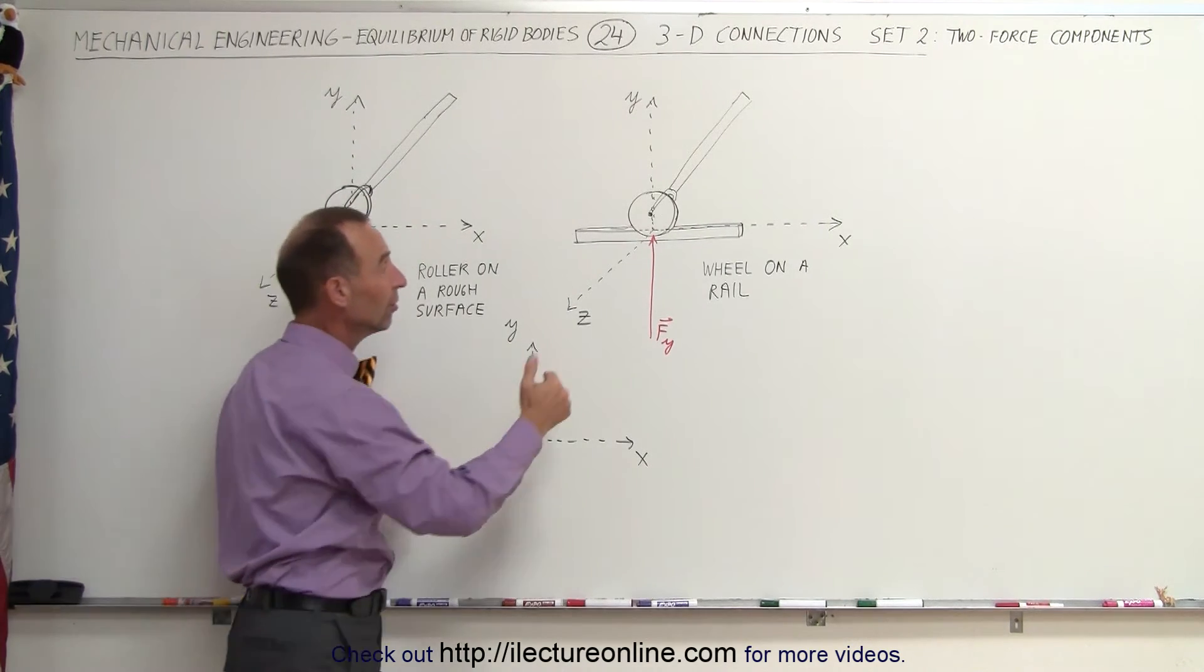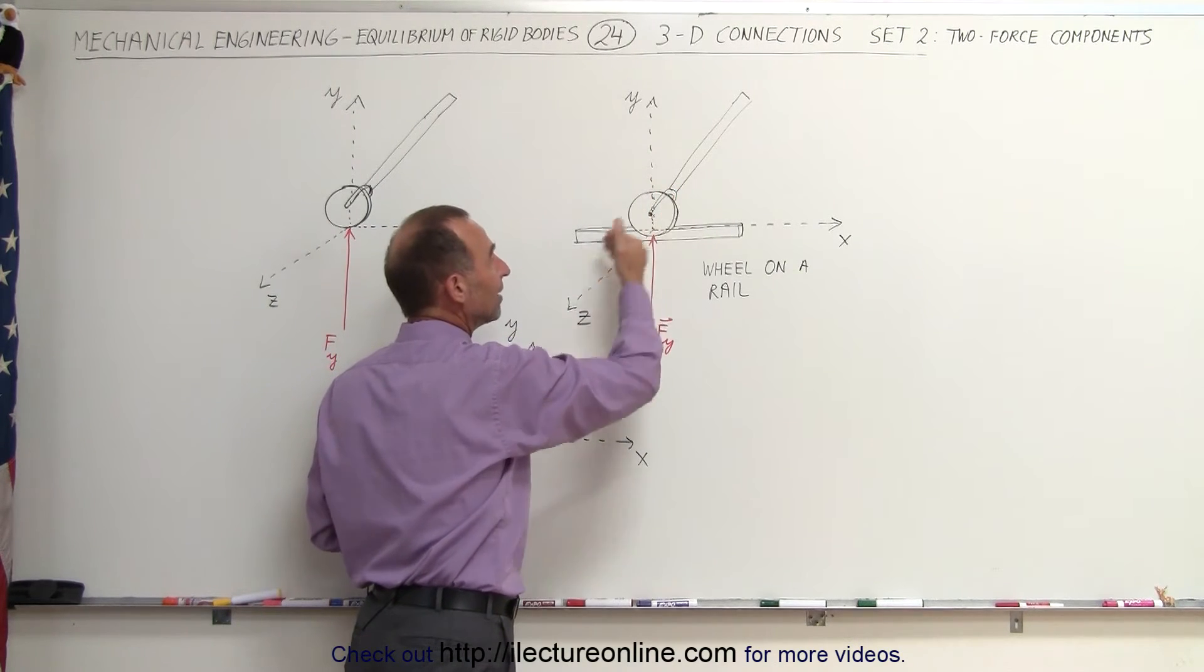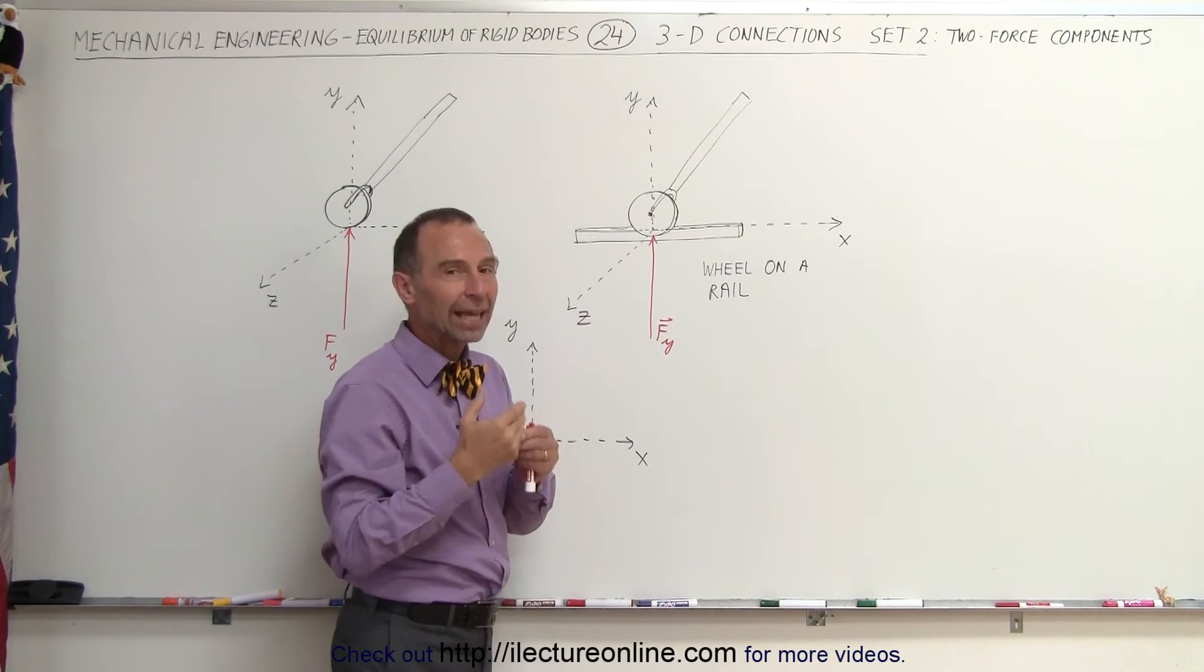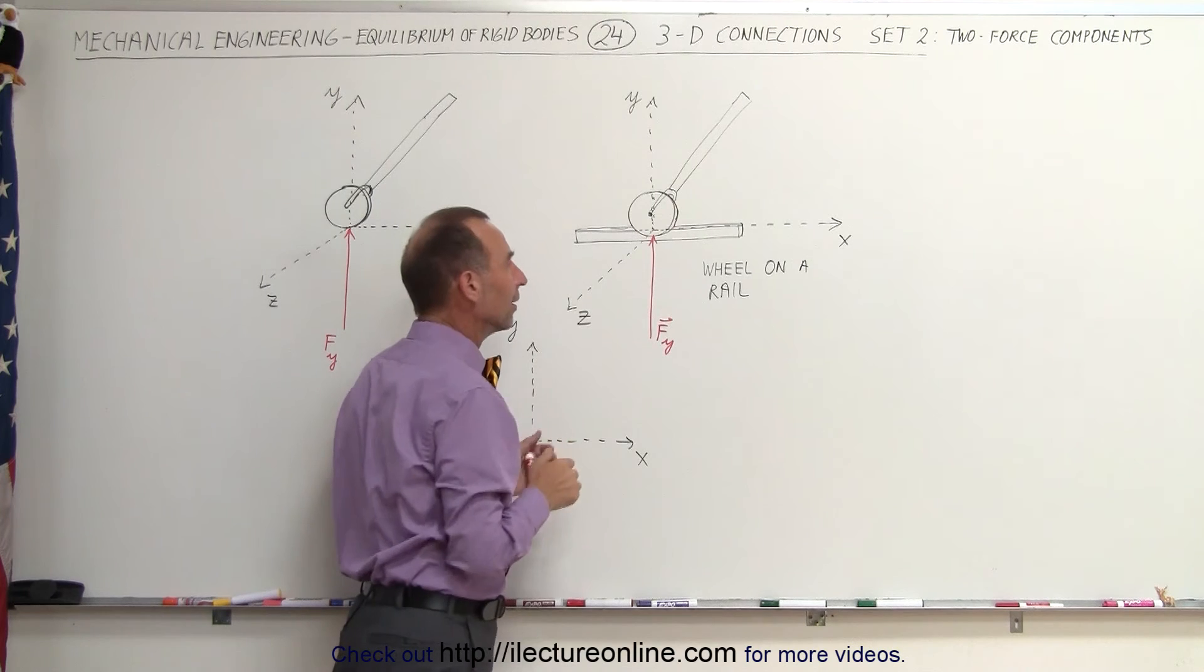Same over here. Since the wheel is on a rail and the rail holds the wheel in place, at least in the Z direction, there can be forces in the Z direction, but the wheel is prevented from moving because of the rail there.